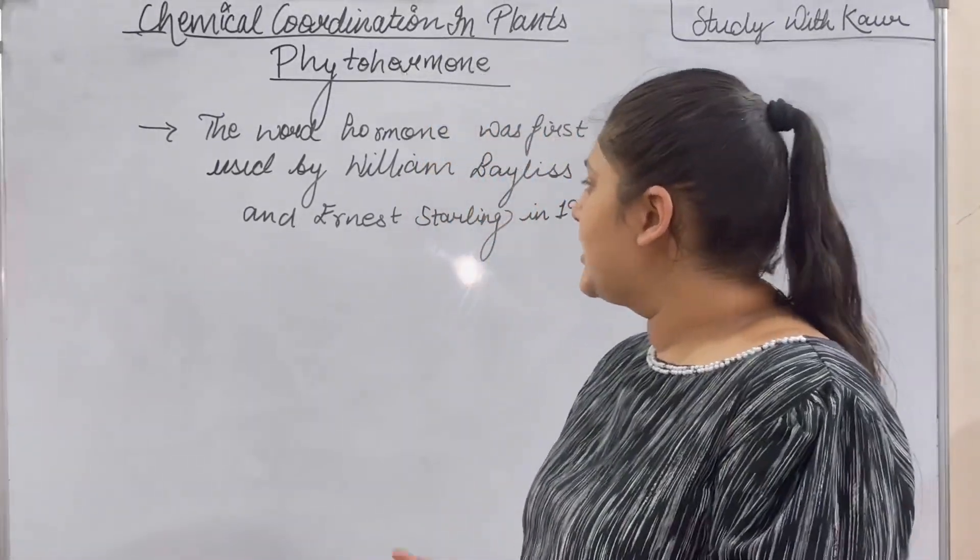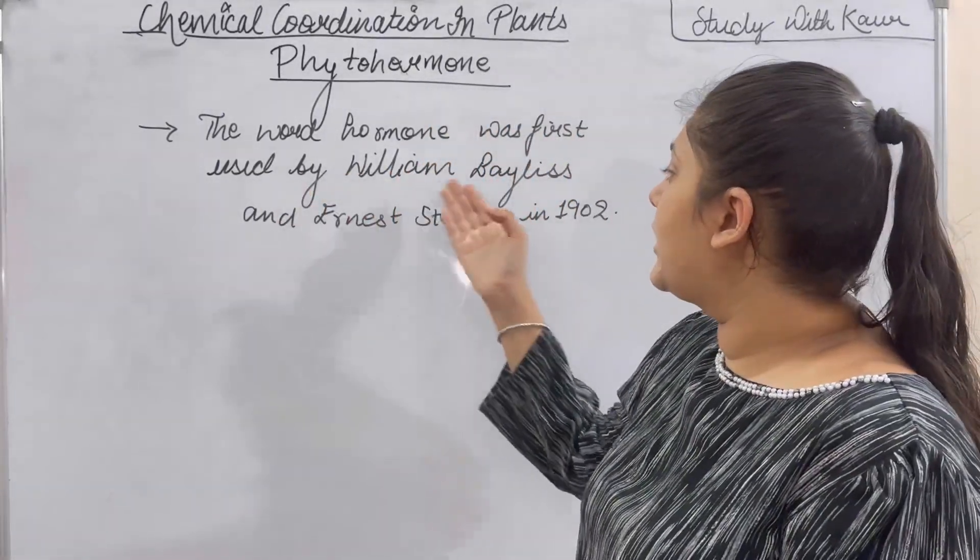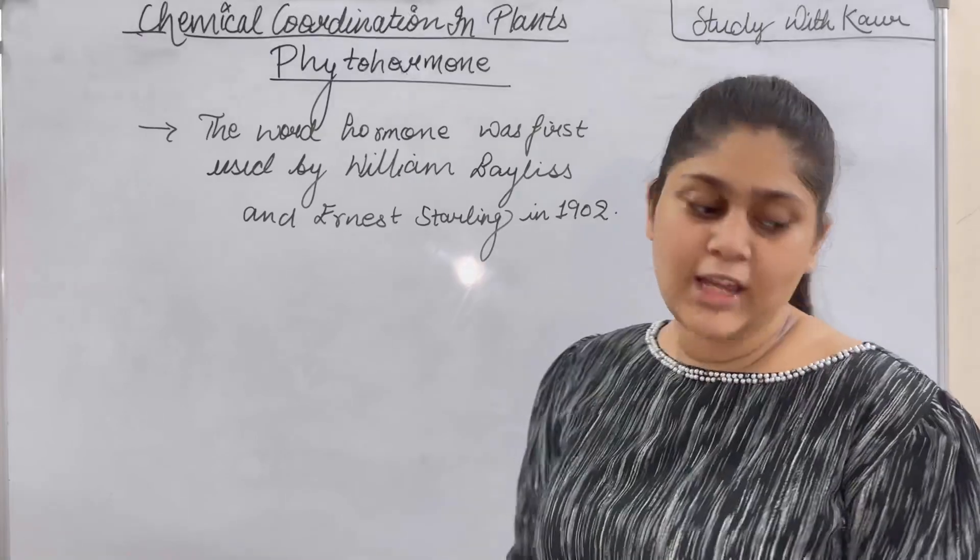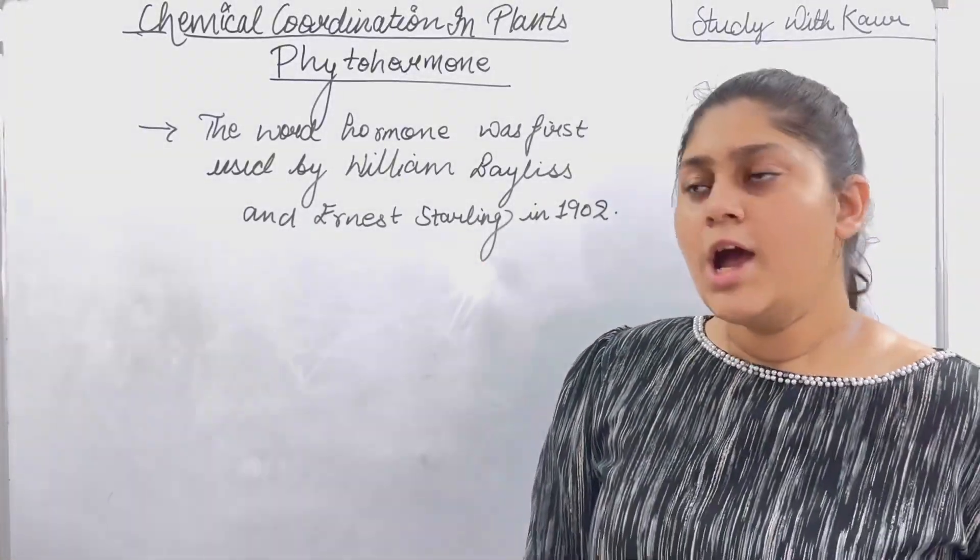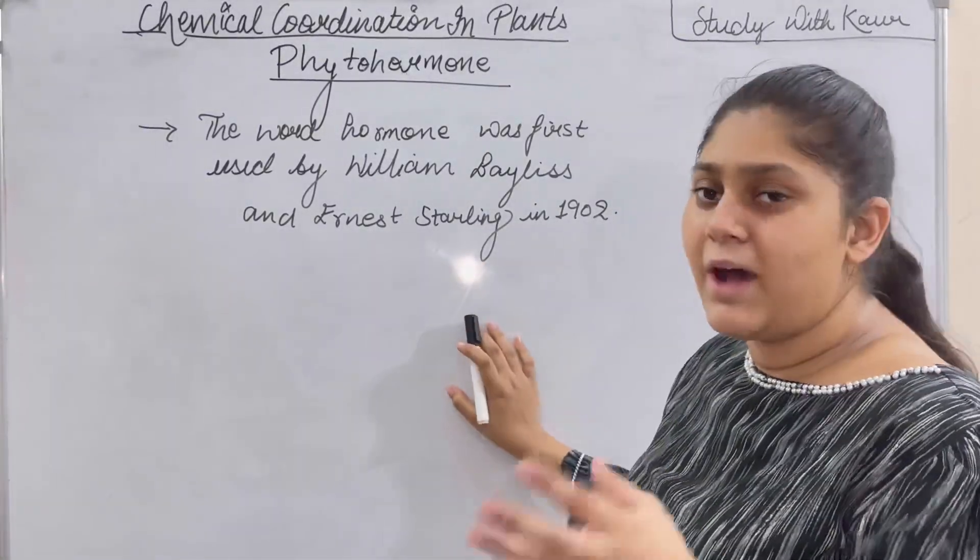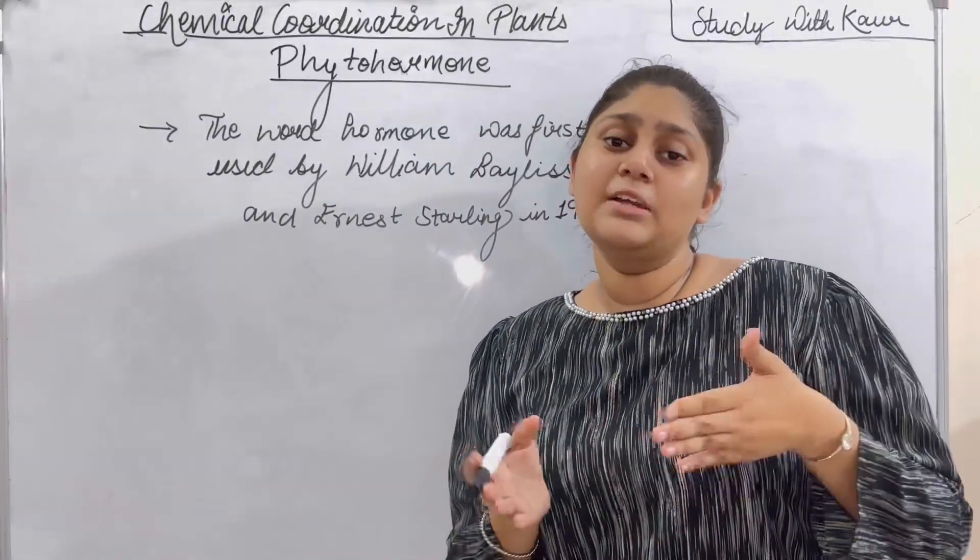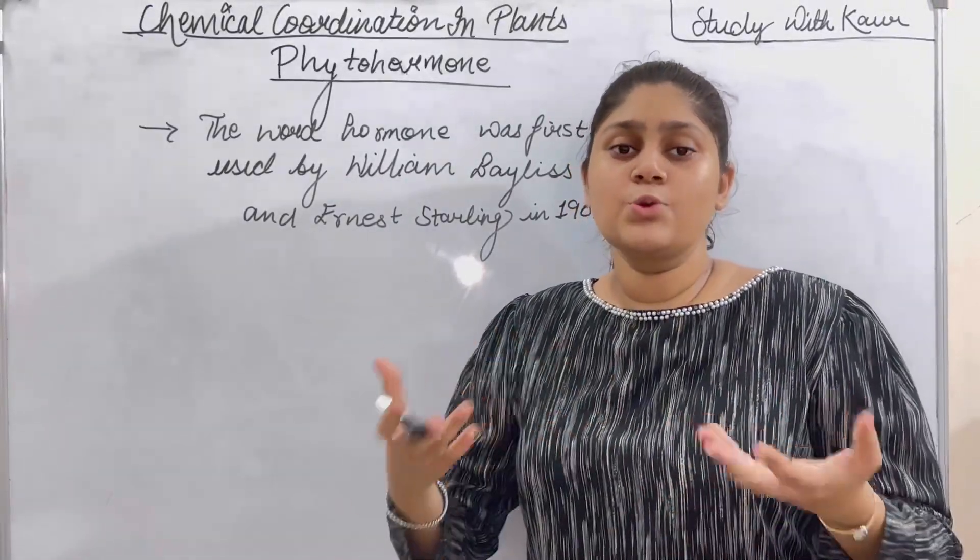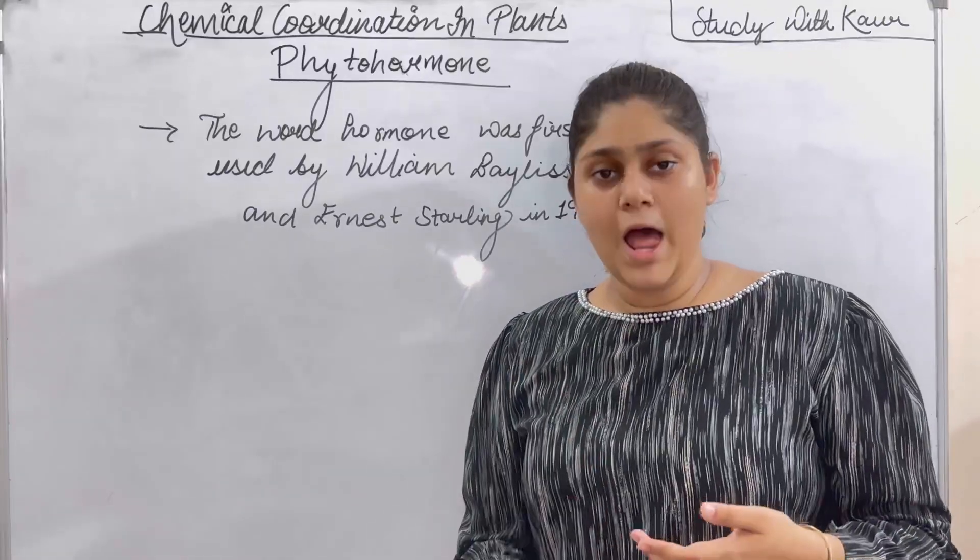Hormone in plant was first used by William Burles and Ernest Sterling in 1902. And this was inspired or you can say was coined by the animal hormone. The first it was used by the animal hormone. Then it came to the plant hormones.